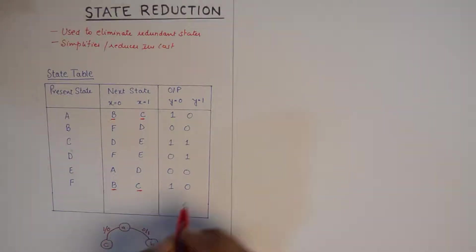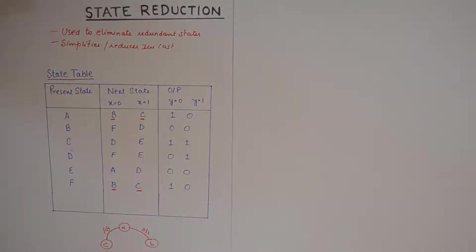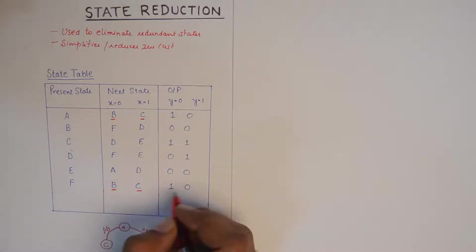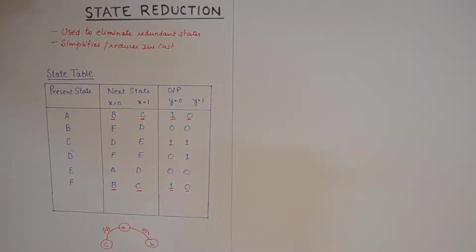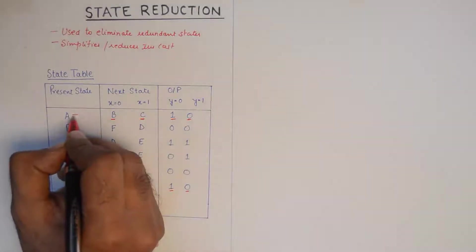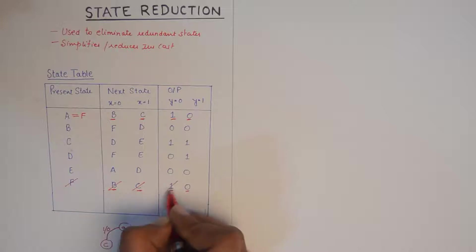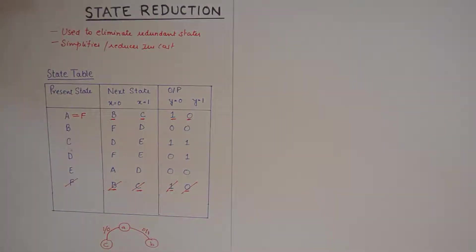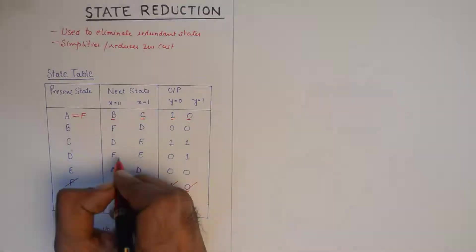In the next step, we check whether the redundant states are also producing the same output — because that is imperative to check. Otherwise you would not be able to label them as redundant or eliminate one of them. They are both giving the same output as well. So I can safely say that state A is equivalent to F, and I can do away with state F. Wherever I see F in the next state column, I can replace it with A.